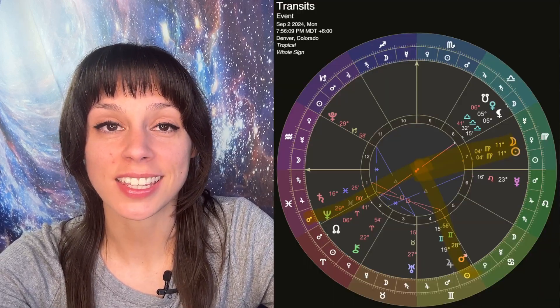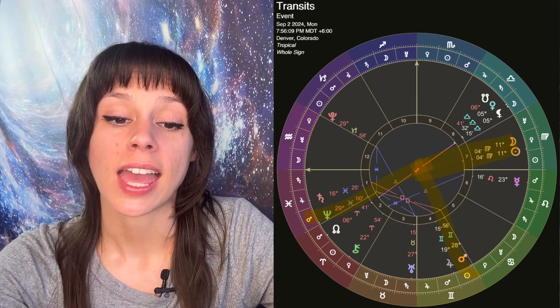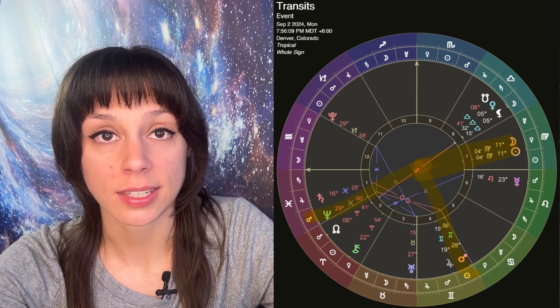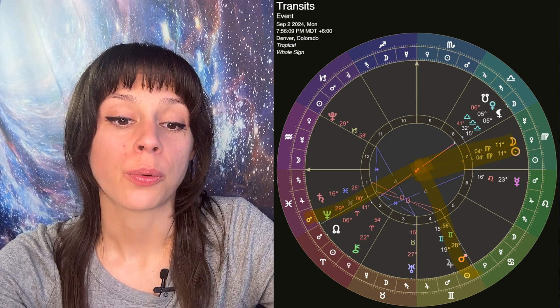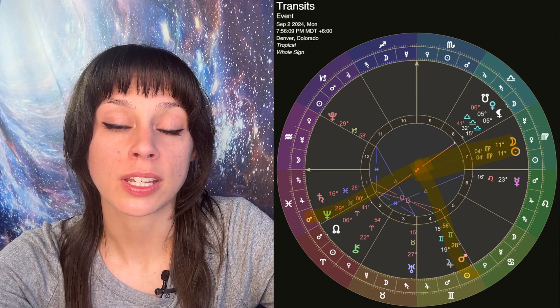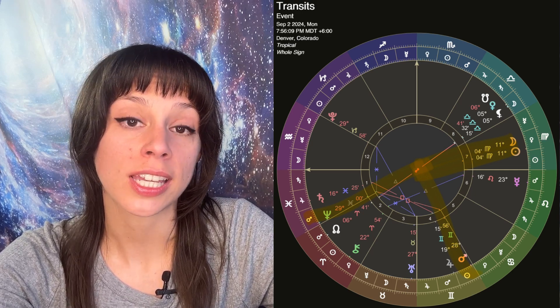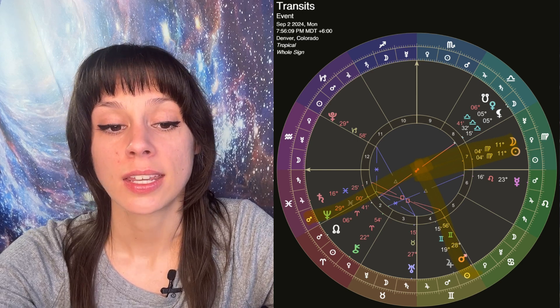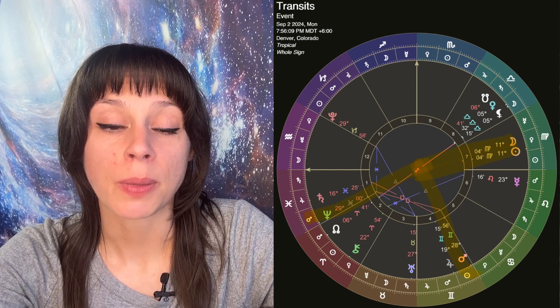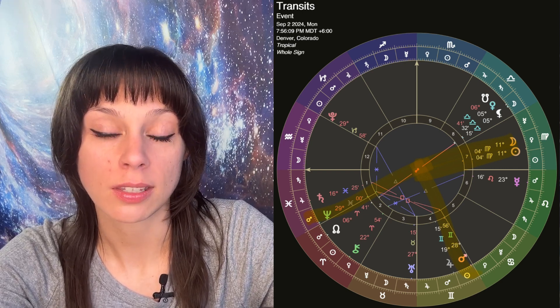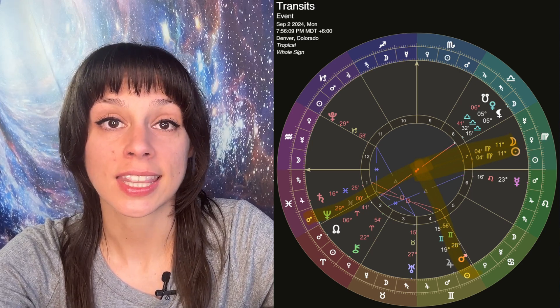Monday, September 2nd was Labor Day yesterday, and Mars made a square to Neptune retrograde at 29 degrees of Gemini and Pisces. We also had a new moon at 11 degrees of Virgo. New moons are meant to be a start of a new cycle. You can set some intentions, think about the area of your life correlated to Virgo, and watch those intentions come to fruition over the next six months.